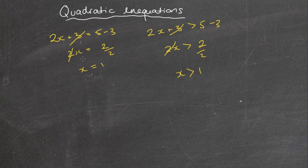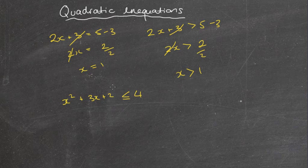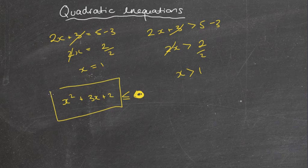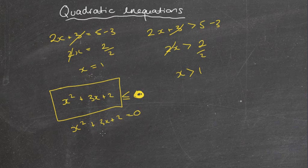This time we're going to look at quadratic inequalities. For example, something like x² + 3x + 2 ≤ 0. What we would do in this instance is set the left side equal to zero — so x² + 3x + 2 = 0 — and solve it just like a normal equation. Once we solve it we can find our x-intercepts, then we'll graph that parabola and use it to solve the inequality correctly.